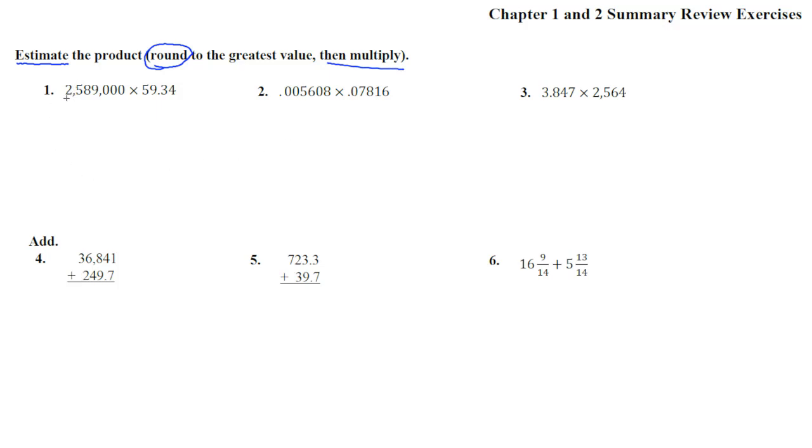So here we're going to be rounding. We look at that 5 - it's 5 or more, so that's going to go up to 3 million. Now we're going to look at that one - the 9 makes that go up to a 6, so 3 million times 60 is the easy problem we're going to do. 3 times 6 is 18, and now we count 1, 2, 3, 4, 5, 6, 7 zeros. Okay, 180 million, that's going to be our estimate.